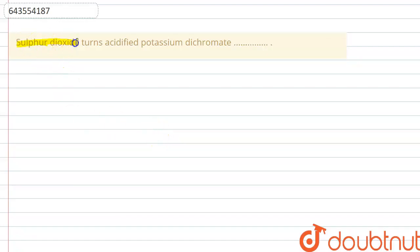Hello everyone, the question is, sulfur dioxide turns acidified potassium dichromate into what? So in this question, we have to fill in the blank that is given here.